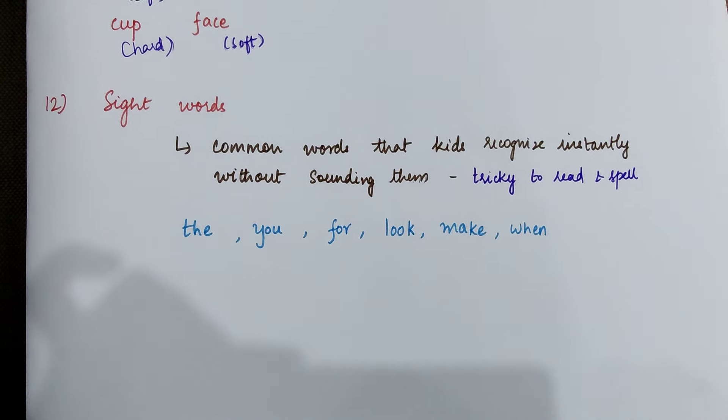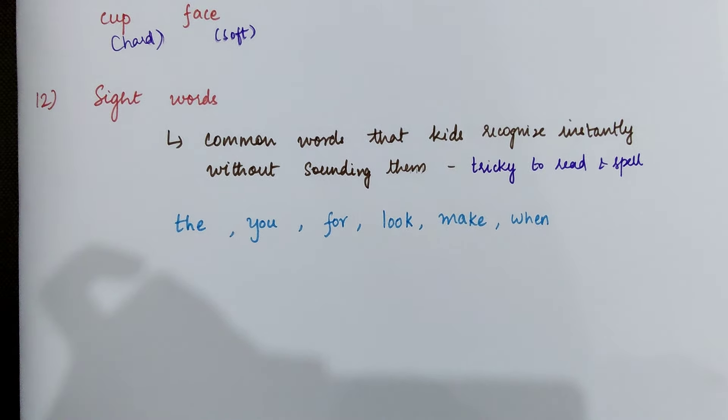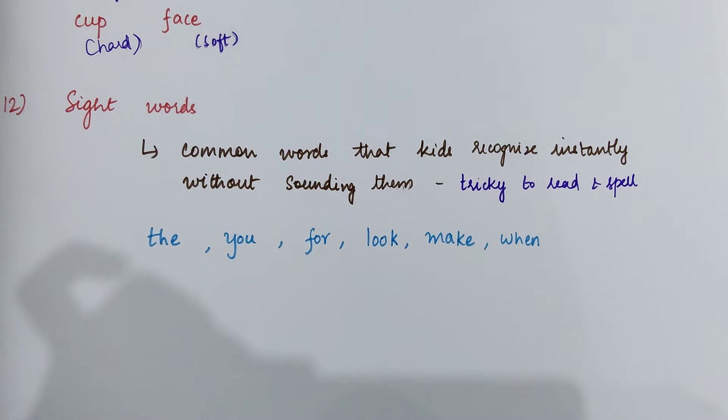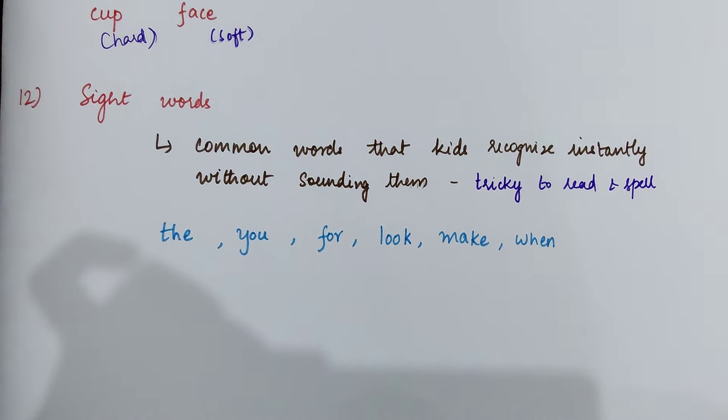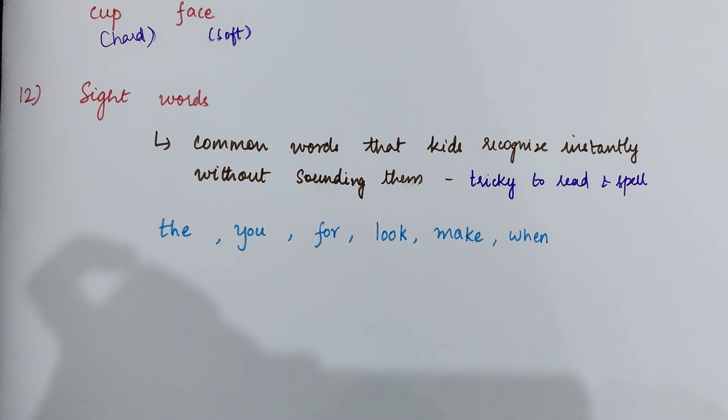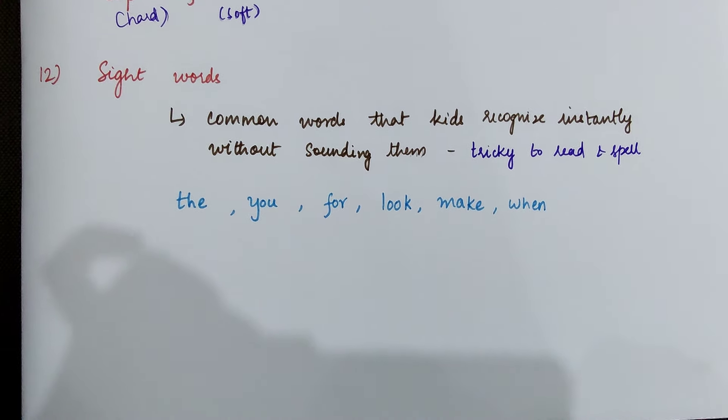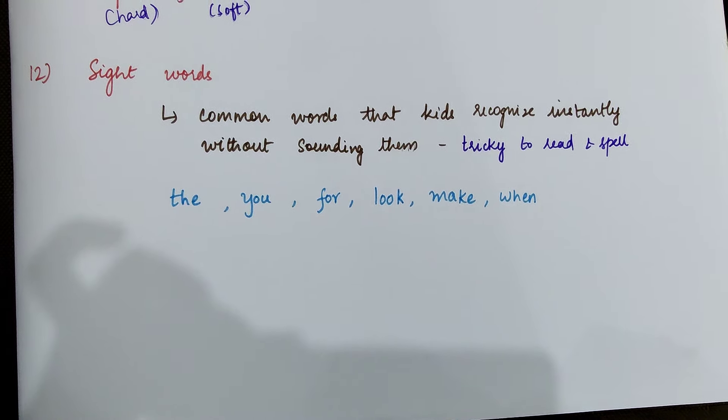Next, the last topic is sight words. Sight words are common words that kids recognize instantly without sounding them. These are tricky to read and spell. Example: the, you, for, look, make, when.